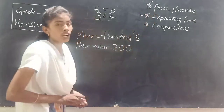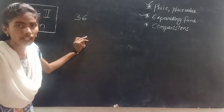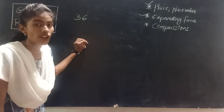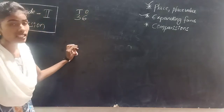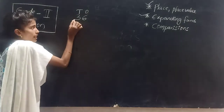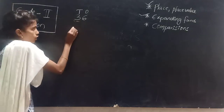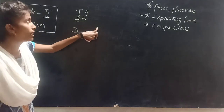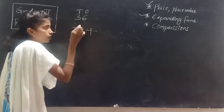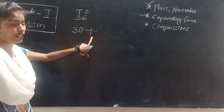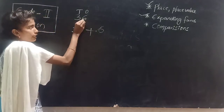Next, expanding forms. Coming to expanding forms, I am giving the number 36. Can you expand this number? To expand a number, we have to write place values again — ones and tens. For expanding the numbers, first we have to take the highest place value, that means the first number. Your first number is 3, and after 3 we have one digit, so that 6 will become 0, making 30. Expanding form means we have to use the symbol of addition — plus. So the expansion form for 36 is 30 plus 6.